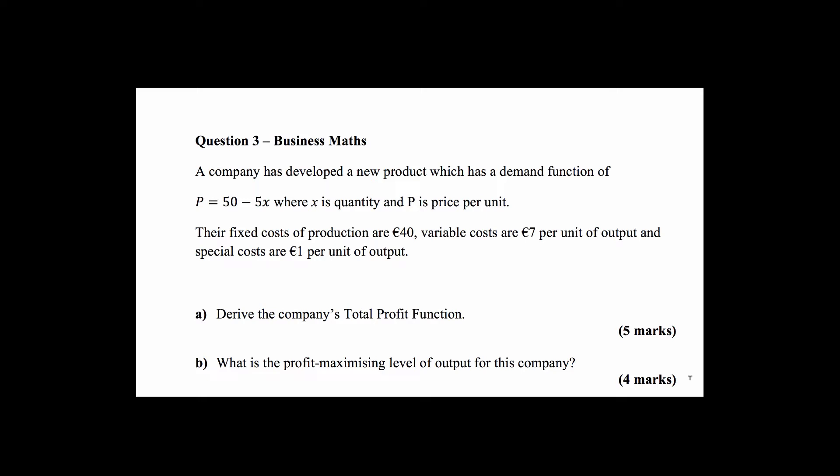What we're going to be presented with here is a demand function: p equals 50 minus 5x. X in this case is quantity and p is price. We're also given some information regarding the costs of this company, broken down into three costs: fixed costs of 40 euro, variable costs of 7 euro, and special costs of 1 euro.